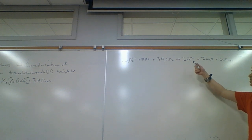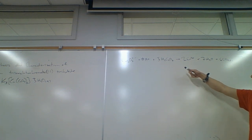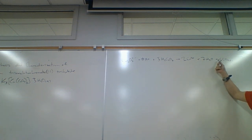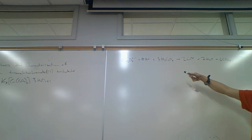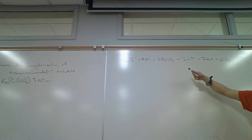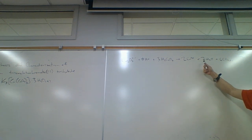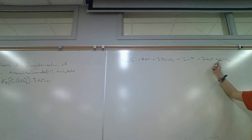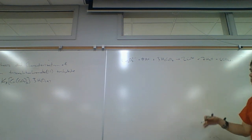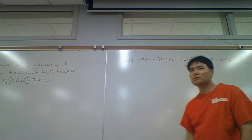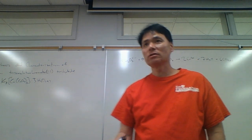Then check the atom balance: two chromiums, two chromiums. Seven plus 12 is 19 oxygens. Eight hydrogens plus six is 14 hydrogens, 14 hydrogens. And then six carbons, six carbons. So the atom is balanced and the charge is balanced — this looks good.